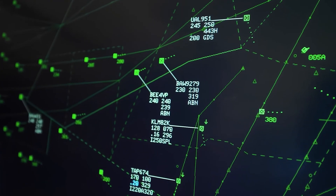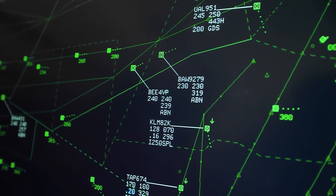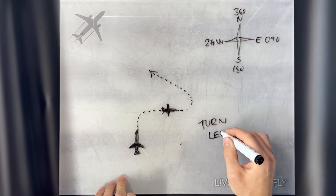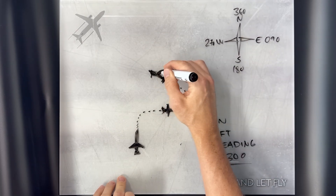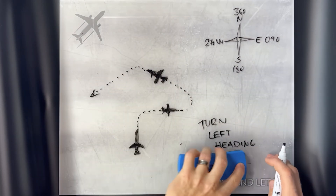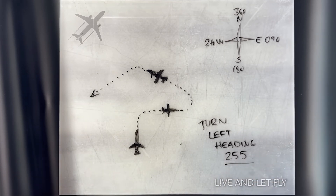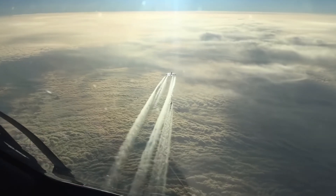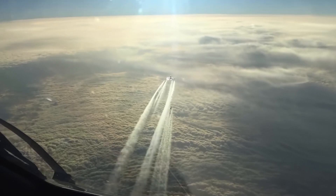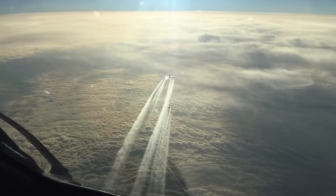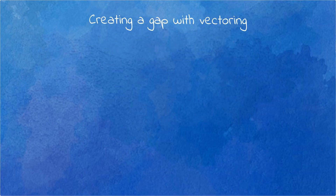The next tool in our toolbox is vectoring — the art of turning aircraft away from their planned route to specific headings. There is reasoning behind every move we make. Here's how we generate extra distance between two aircraft. It doesn't matter if these aircraft are departing, arriving, or on cruising levels — the principle is exactly the same. Two flights are following each other to a common point.